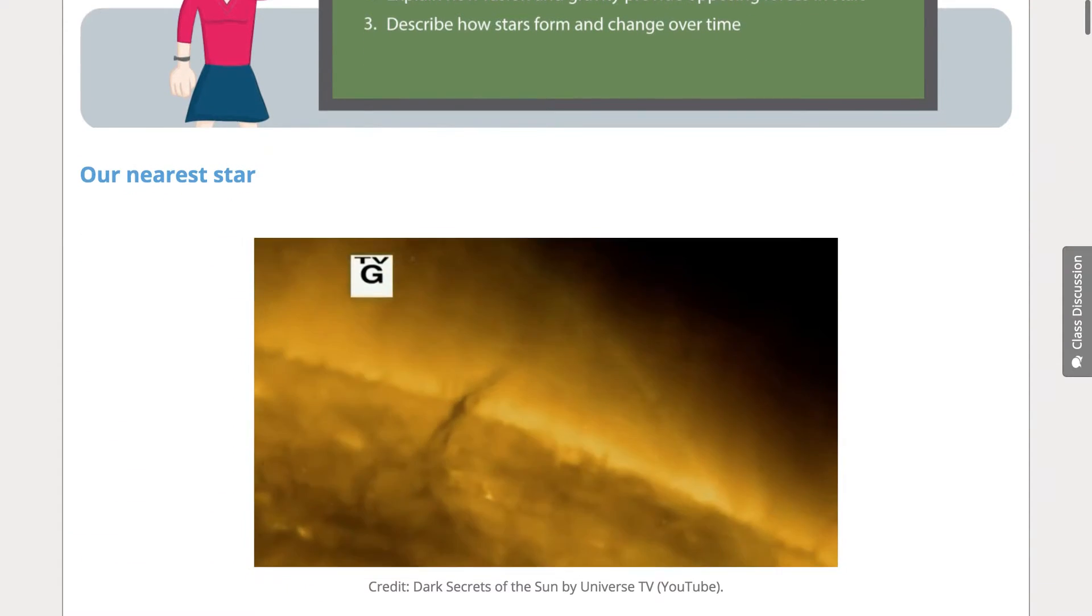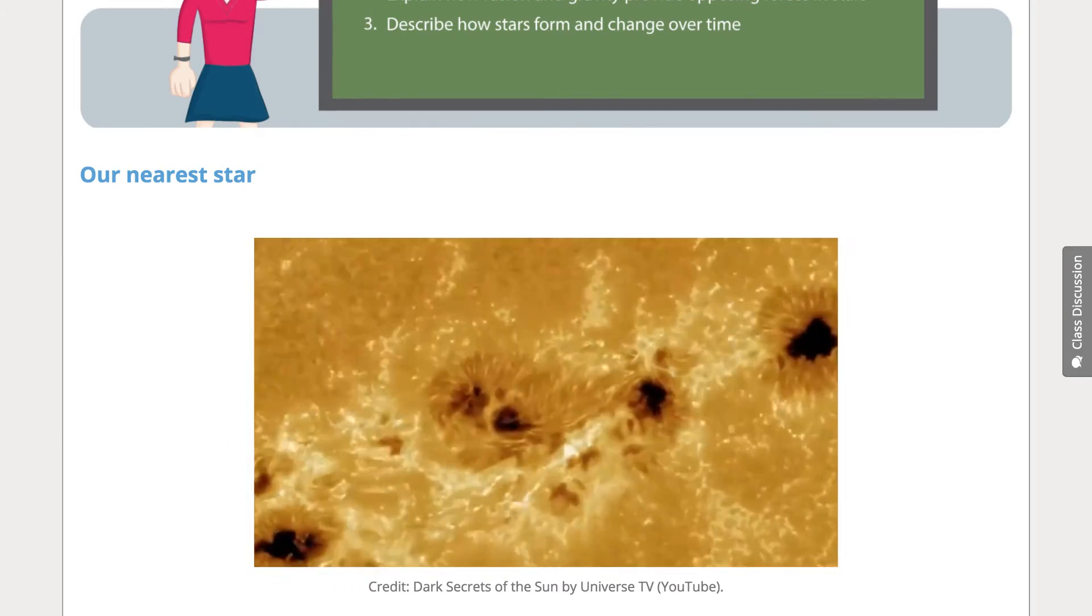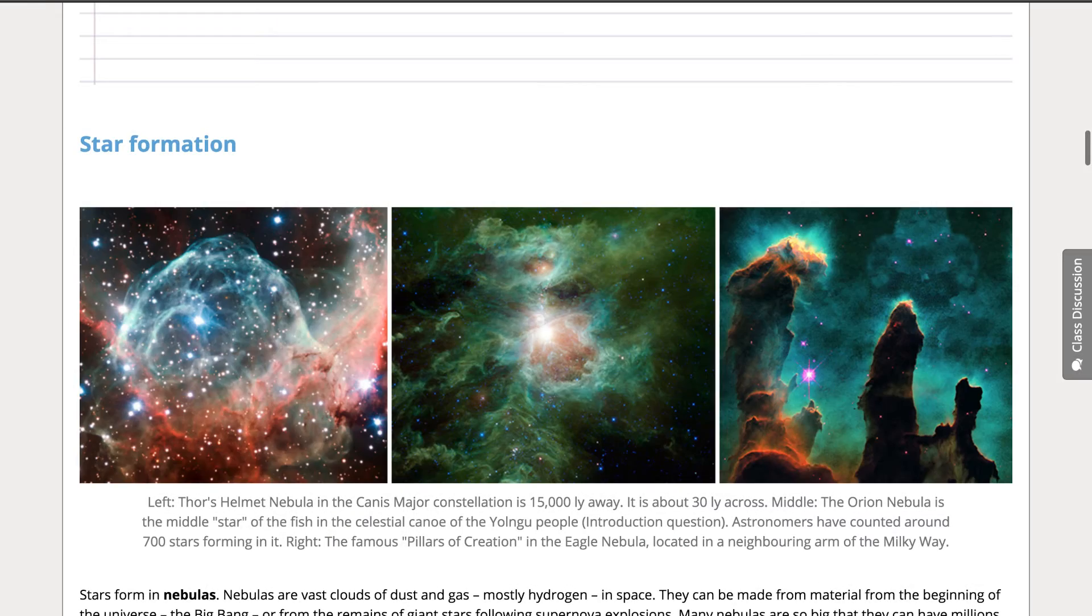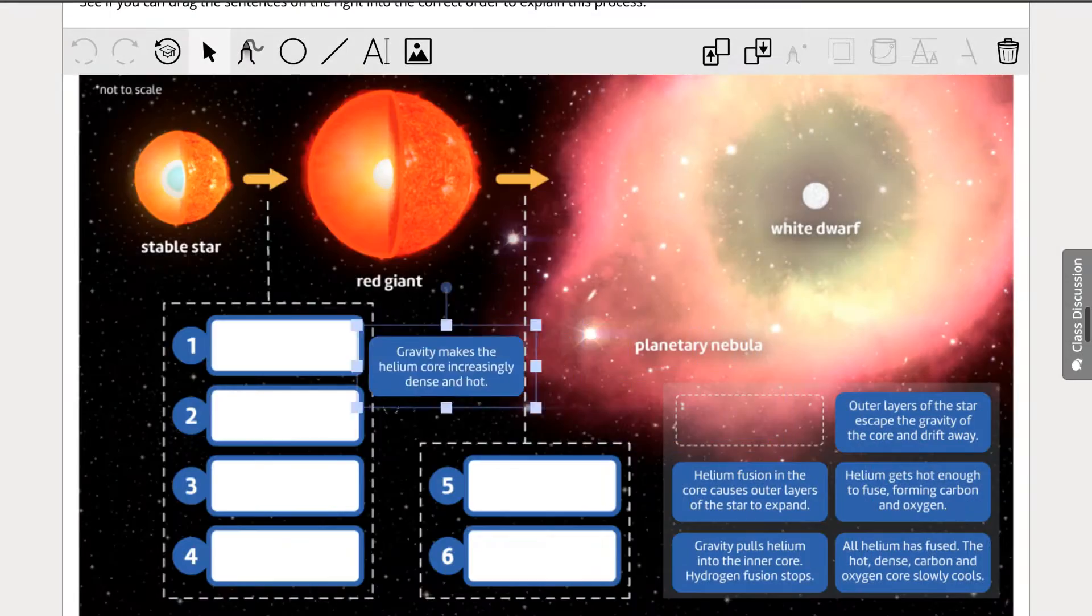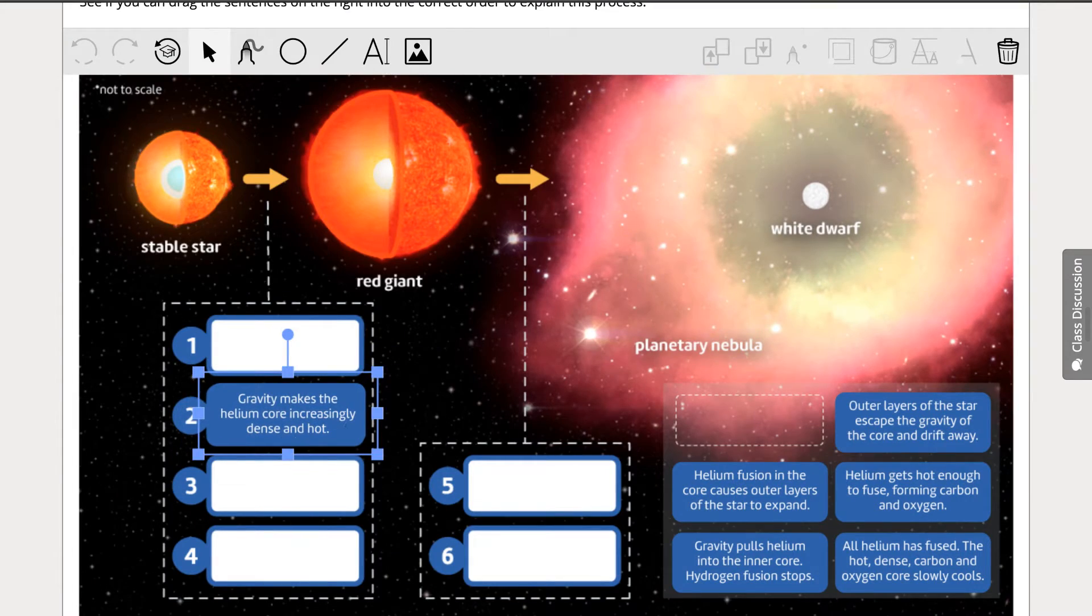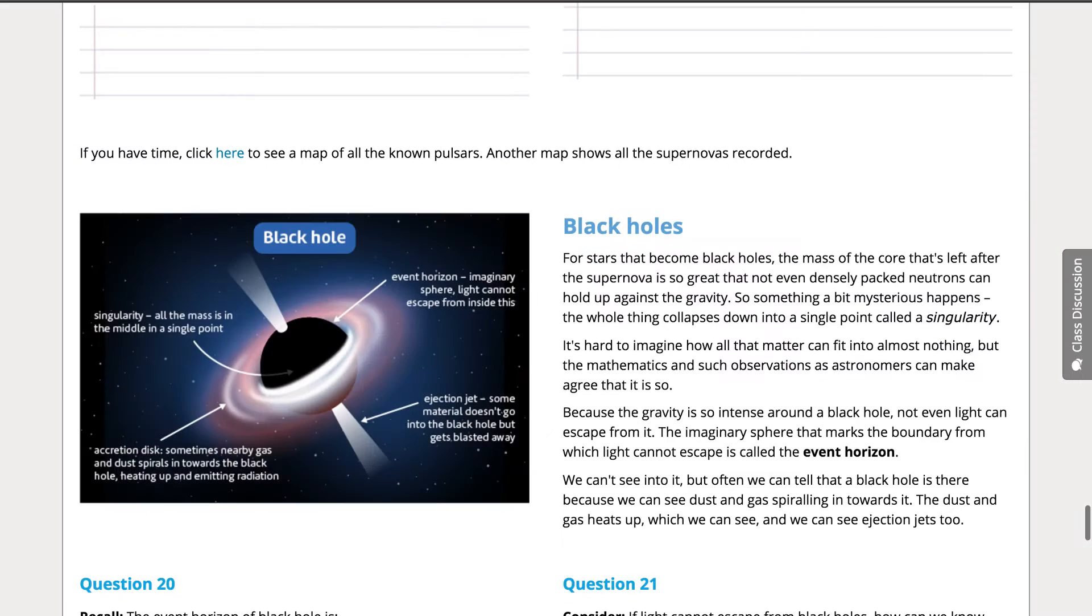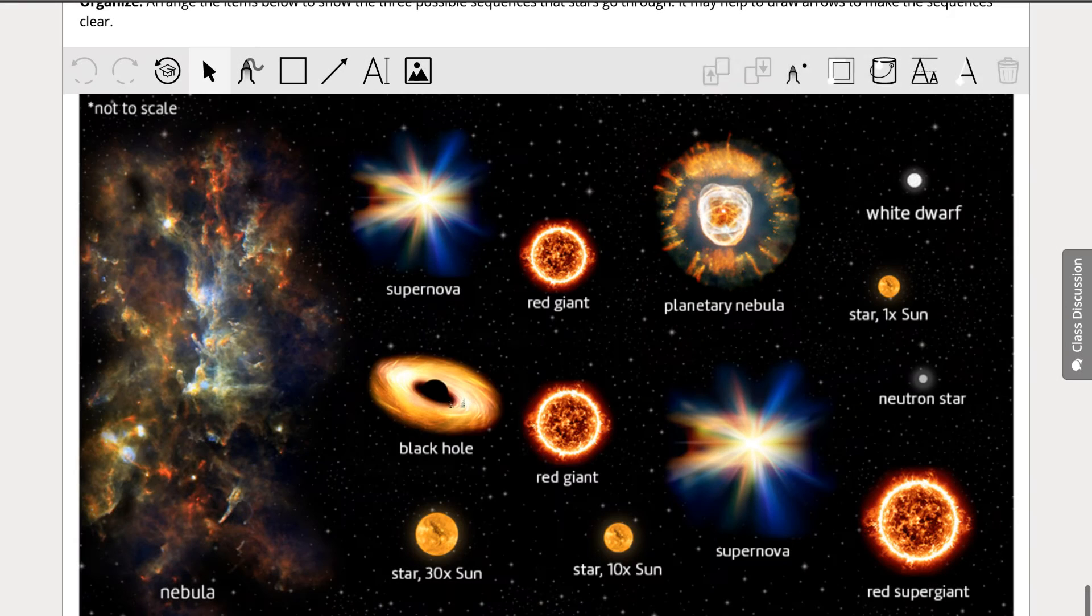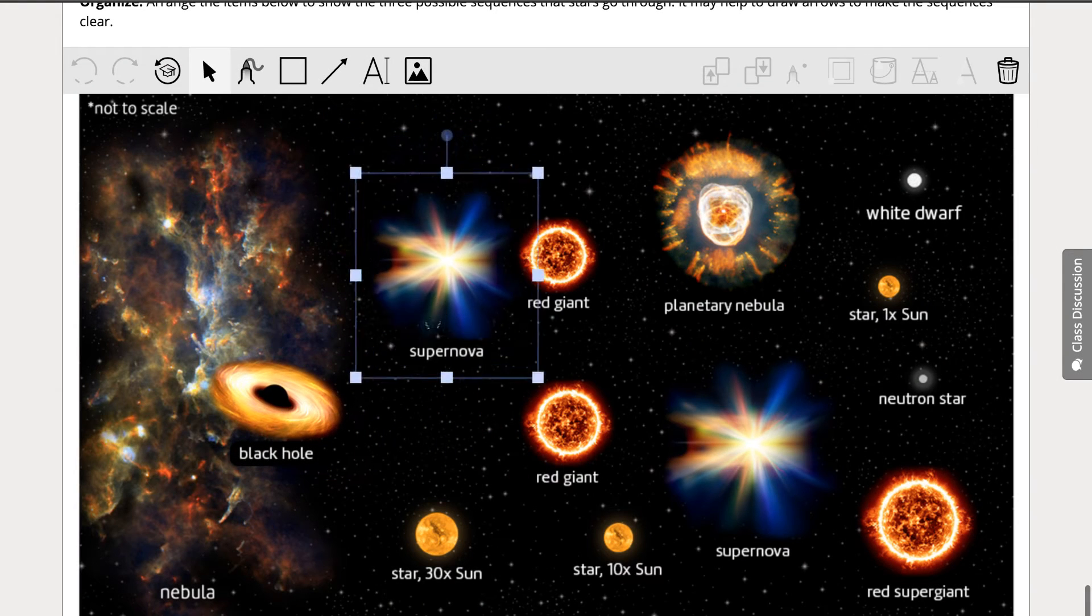In the Stars lesson, we start with the star we know most about, the Sun. Then we go through from star formation to star death, with white dwarfs, neutron stars and black holes. The kids summarize what they've learned with a drag and drop exercise at the end.